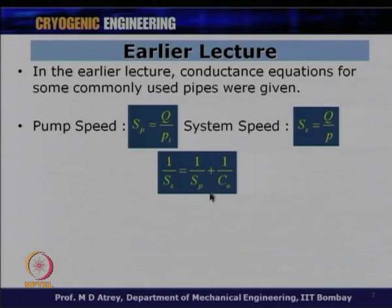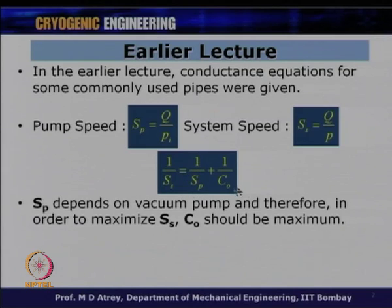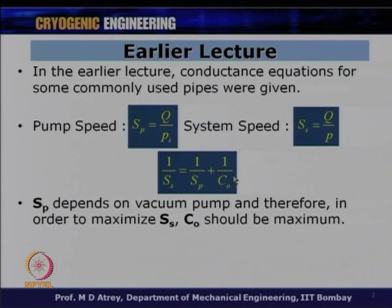In order to maximize SS, we have to use a pump with maximum SP and an arrangement that gives maximum conductance. From this equation, SP depends on the vacuum pump — what kind of pump we use will decide the maximum SP it can deliver. CO depends on the arrangement: whether we can use big diameters, minimum curvatures, and so on. In a good vacuum system design, CO has to be kept as high as possible, though it is usually governed by geometrical placement and configuration.